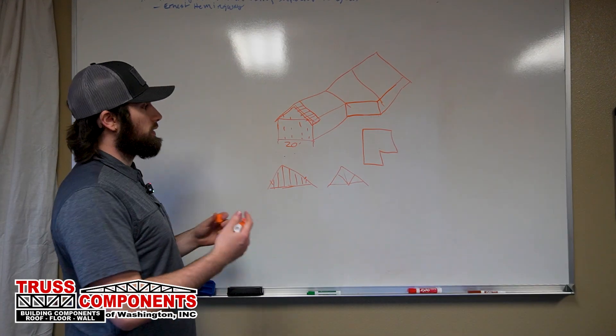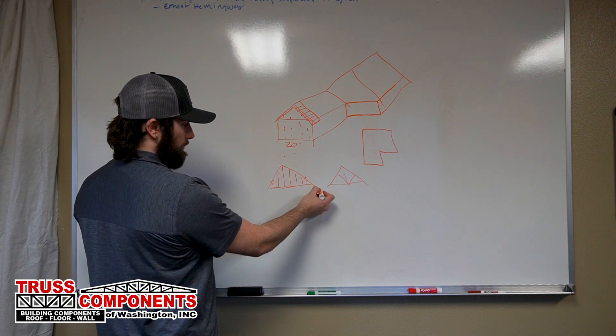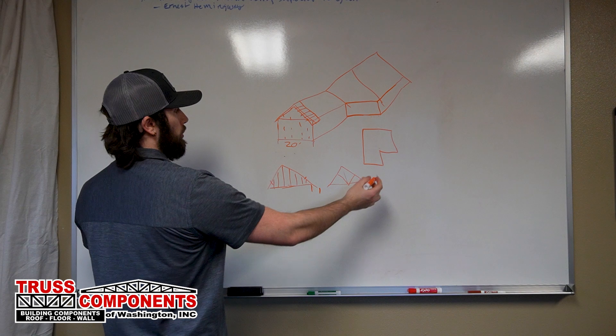And I didn't explain our overhang, but this is a good opportunity. The end of the truss here that extends past the bearing wall, that's what we'll call our overhang.